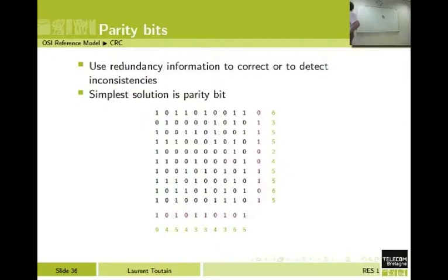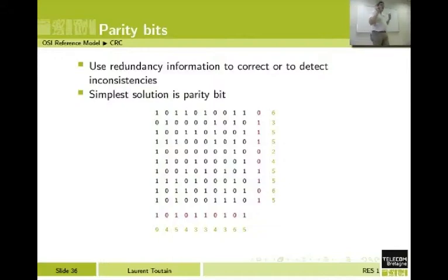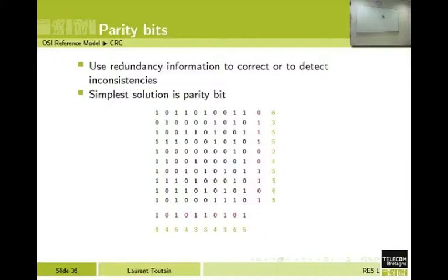I have an even number so I will put 0. On the second row I have sent 3 bits equal to 1, so I will add an extra bit equal to 1 to have 4 — an even number of bits equal to 1. And so on. I do this with the row.